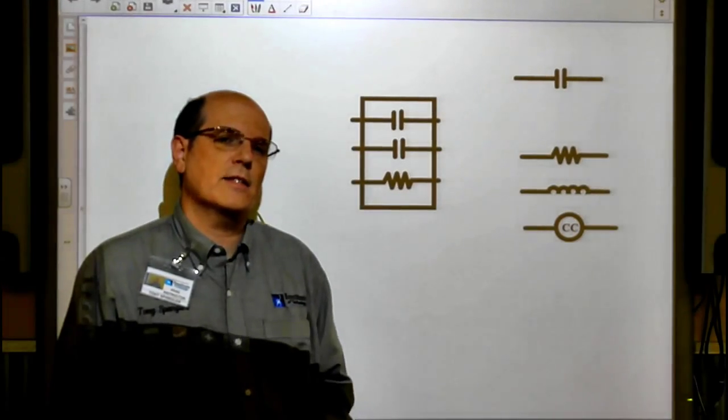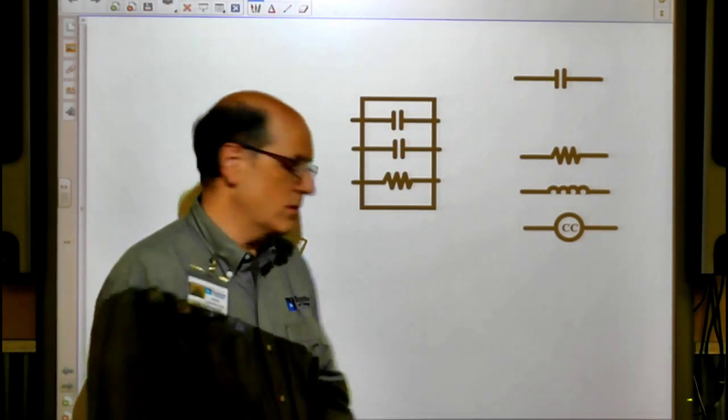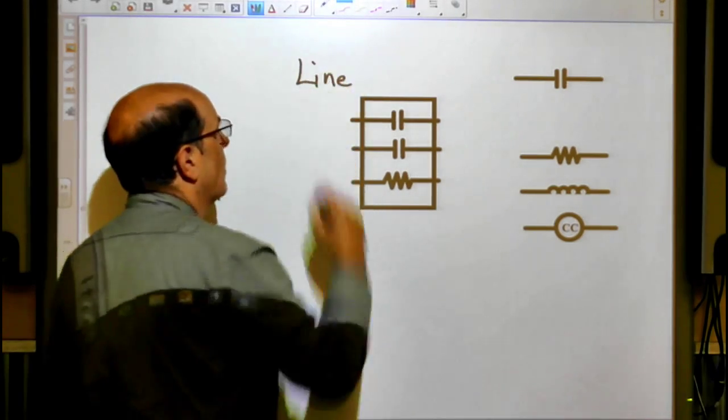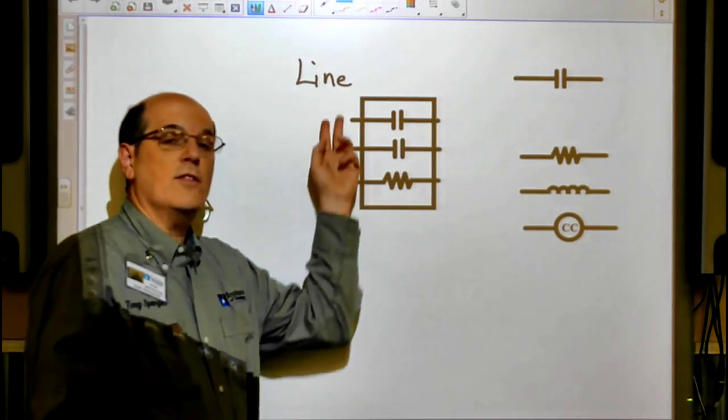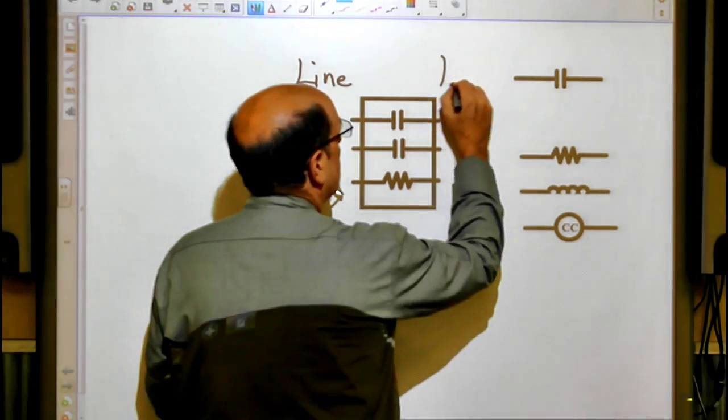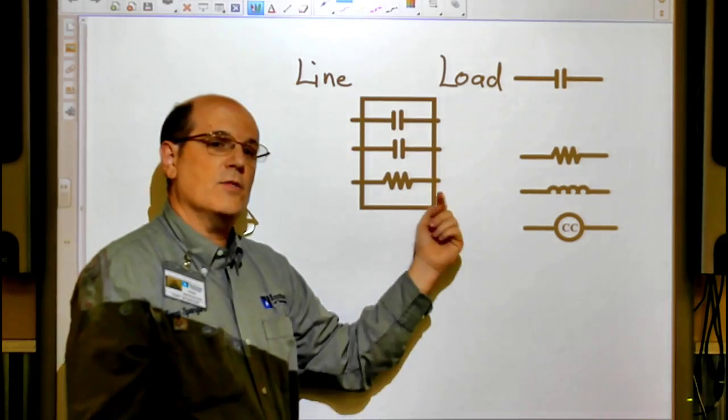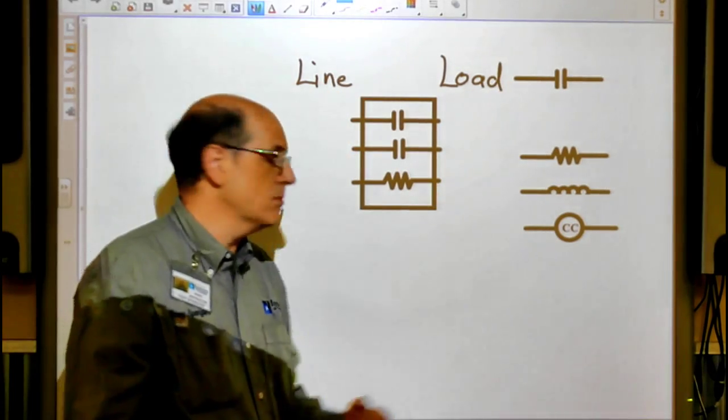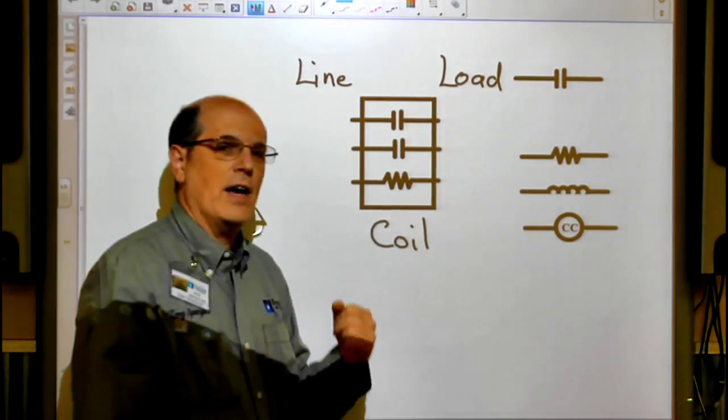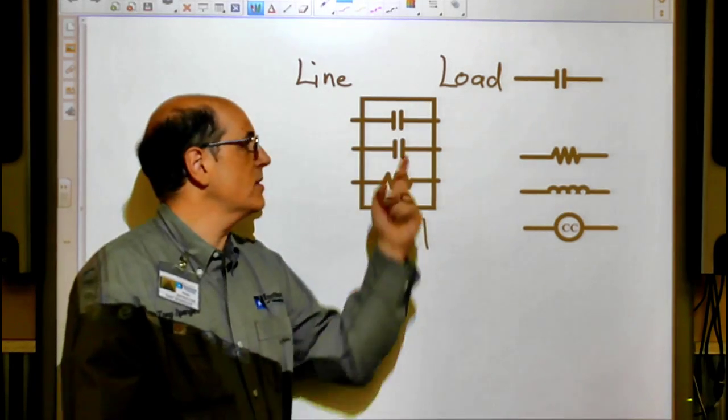Here we see a schematic symbol of a contactor. A contactor is broken up into three basic parts. We have the line side, where we bring the power into the circuit. We have the load side, where we transfer the power to. And we have the coil, which is used to energize this contact.